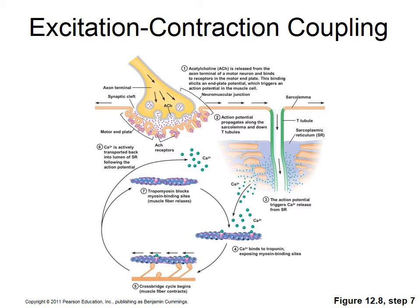Nicotinic cholinergic receptors are nonspecific cation channels — when they open, sodium rushes in and some potassium leaves, but far more sodium enters. This depolarizes the muscle fiber and opens voltage-gated sodium channels. Action potentials in skeletal muscle are identical to those in neurons: voltage-gated sodium channels open, sodium rushes in, then voltage-gated potassium channels open and potassium rushes out — depolarization followed by repolarization.